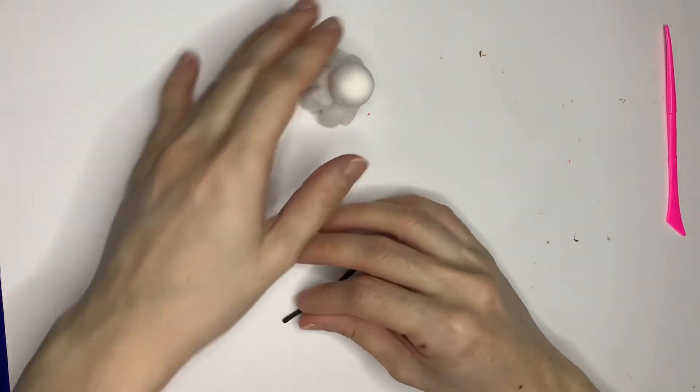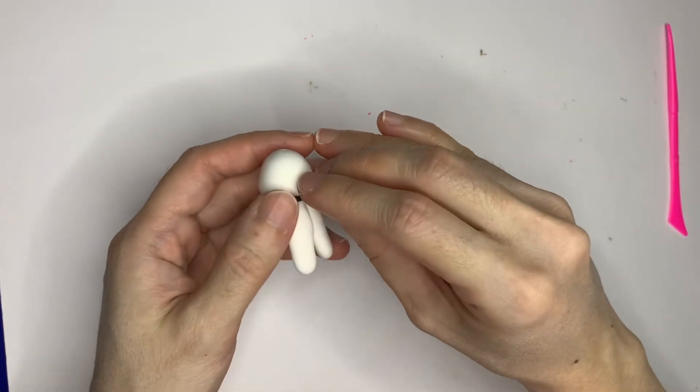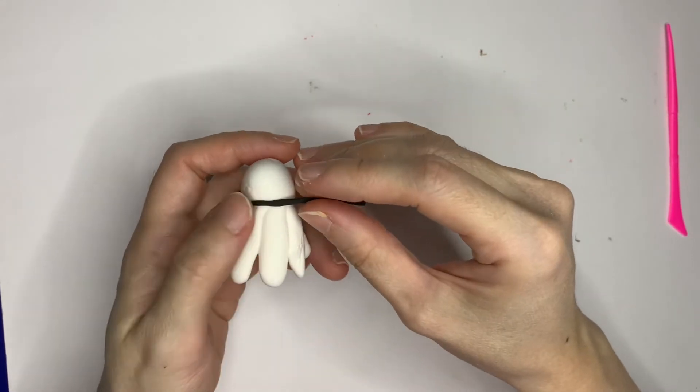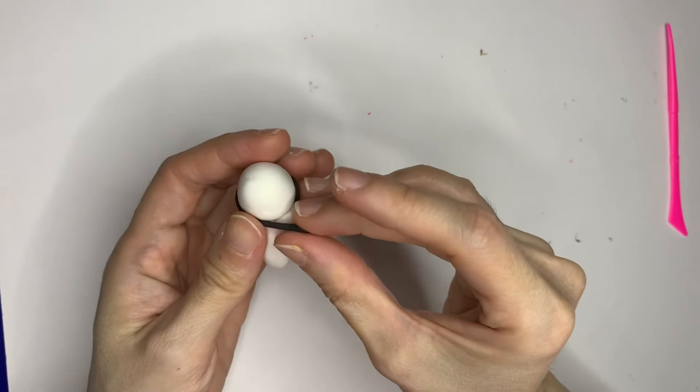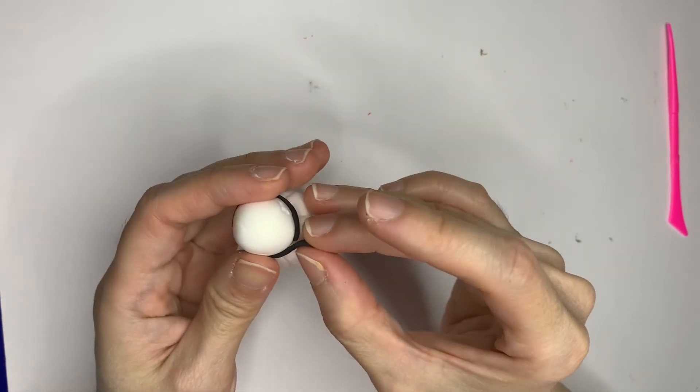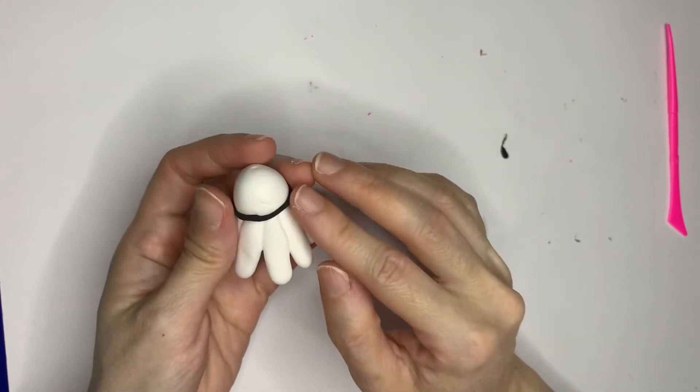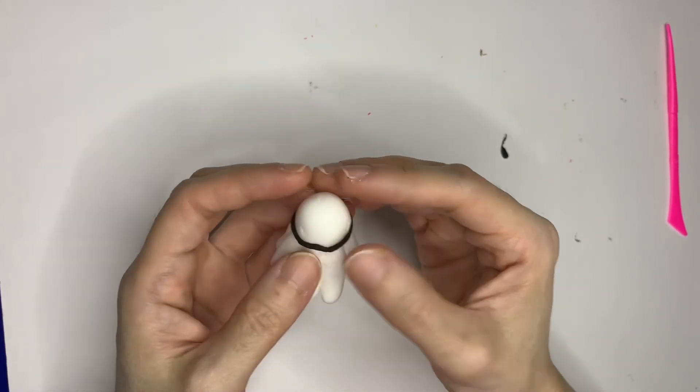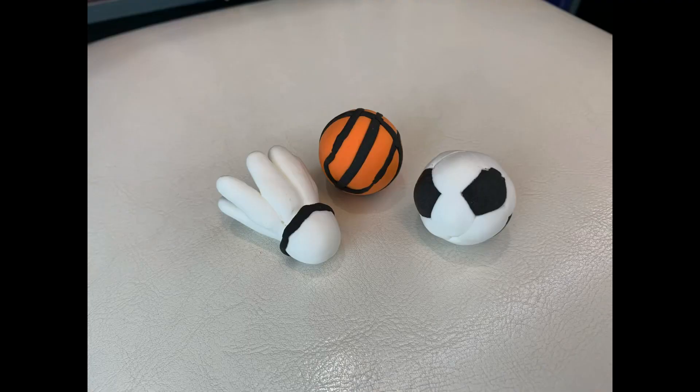Lastly, make one black stripe and then attach it circling the half ball that we have just made. Thank you for watching this video, bye bye.